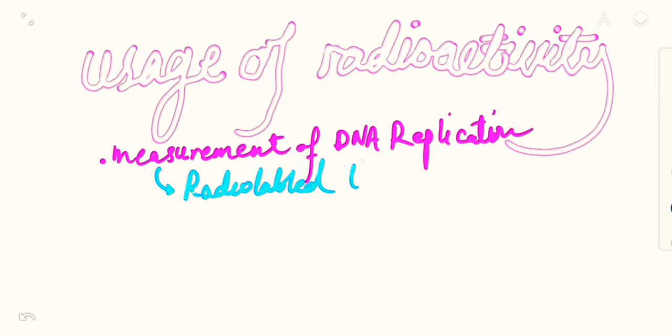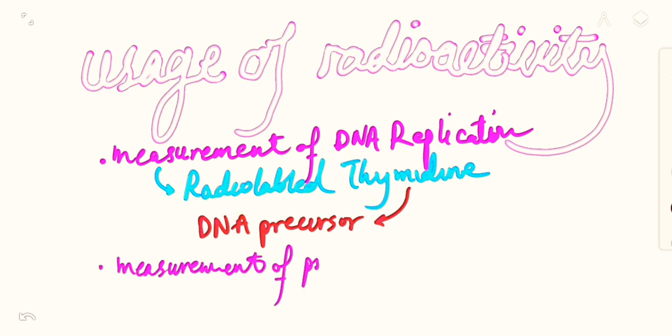In this method or for this purpose, radiolabeled thymidine will be introduced into the cell. This thymidine is the DNA precursor, which means DNA will be made from it.